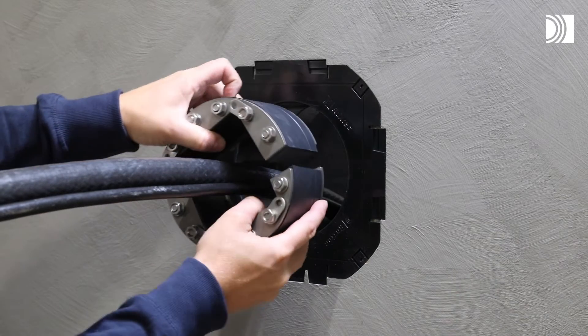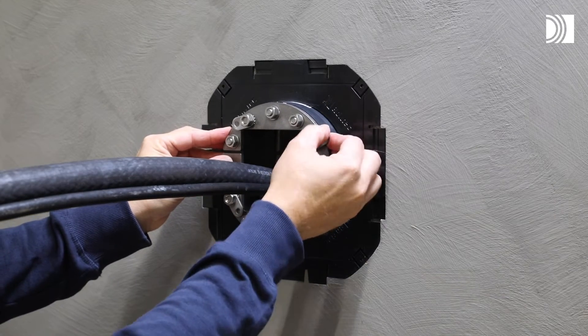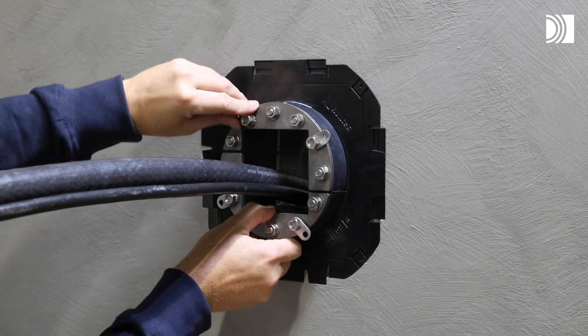Loosen all the nuts, open up the frame and place it around the cables or pipes. Fold out the tabs. Tabs are folded in for inserted installations.